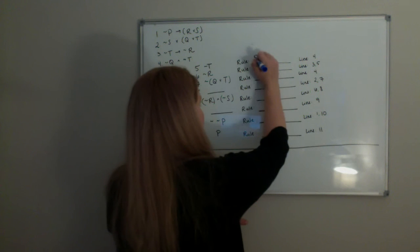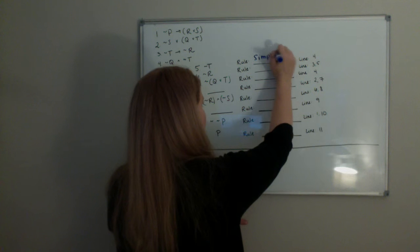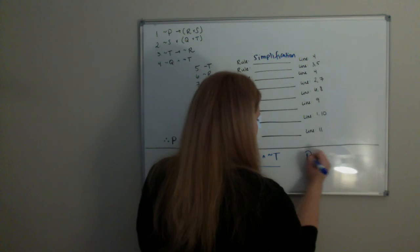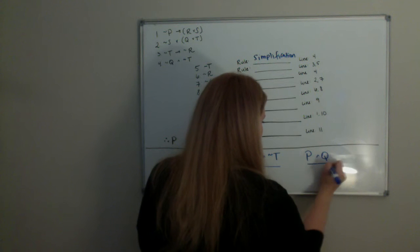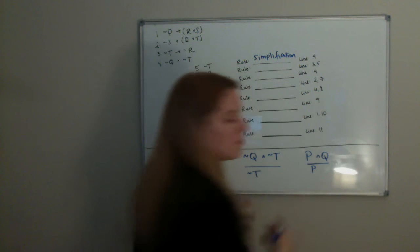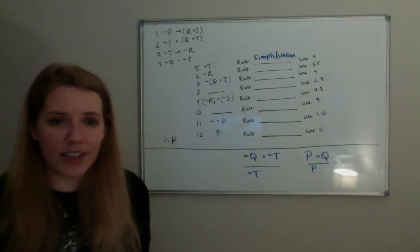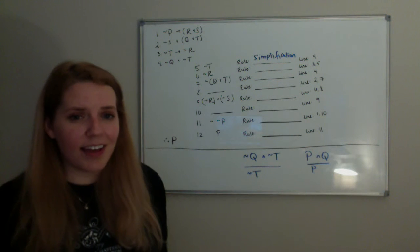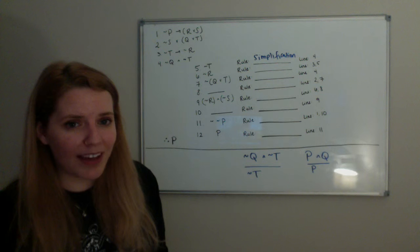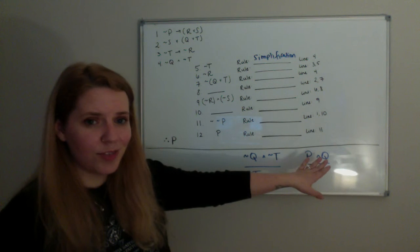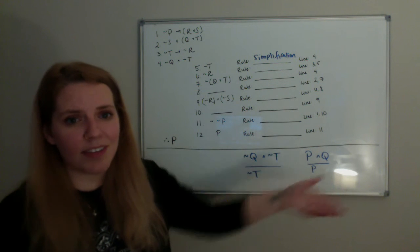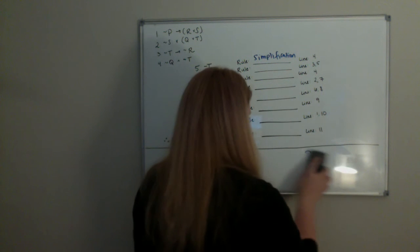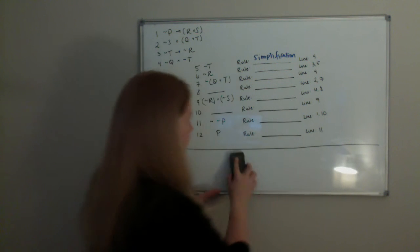Simplification tells us: if we have something like P and Q, then we can just say P. If I tell you my name is Rebecca and I'm from North Carolina, then I can also just say my name is Rebecca. If these two things are true, then we know that each one of the things is true on its own. So that was our first one.